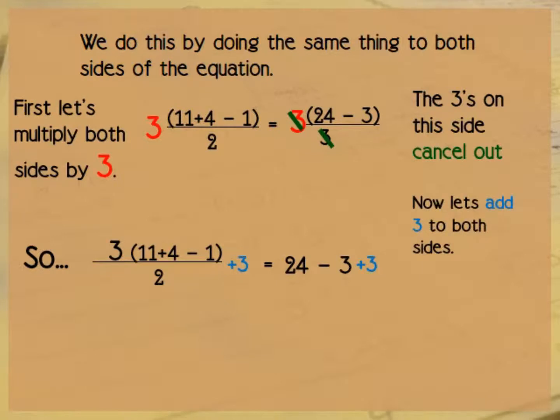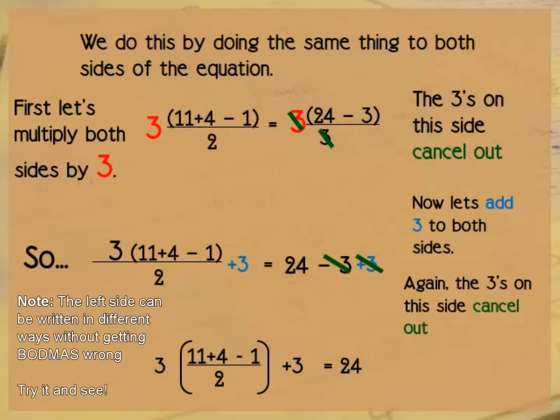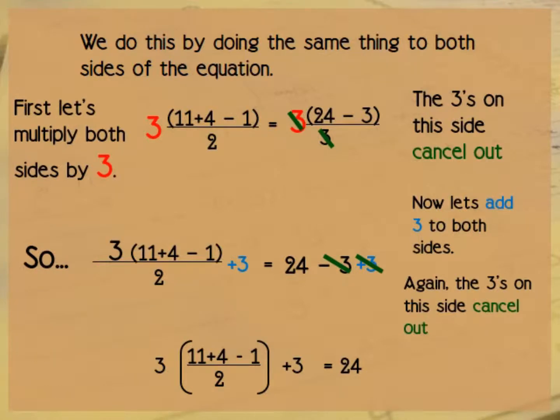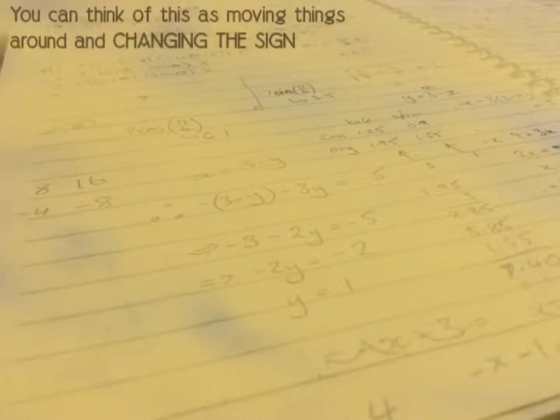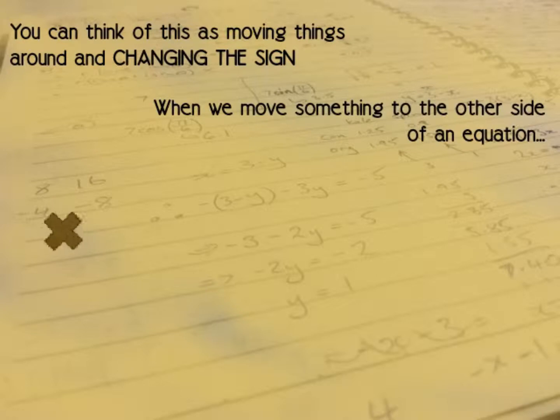Now let's add three to both sides. And again, we can see that the threes on the right hand side will cancel out. So we end up with exactly what we had before. Three multiplied by all of 11 plus 4 minus 1 over 2 plus 3 equals 24.